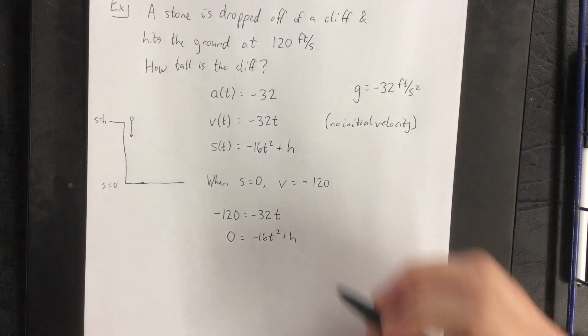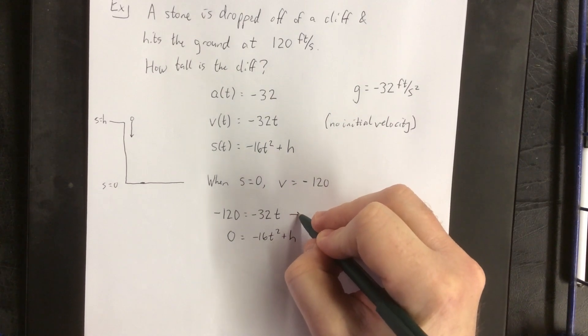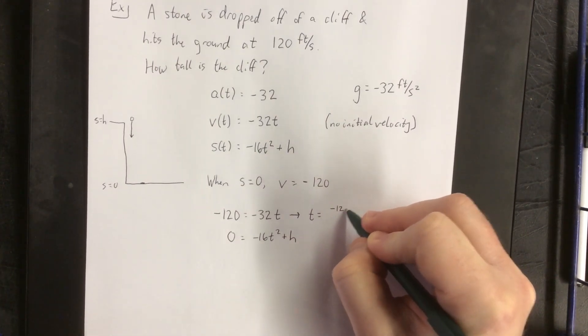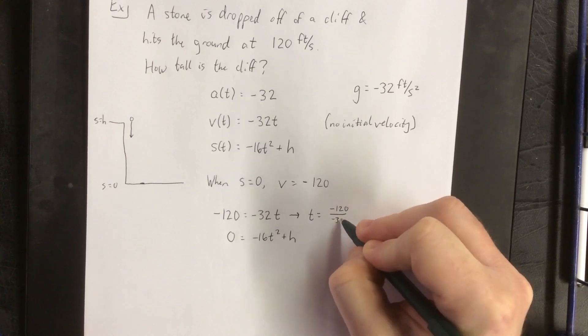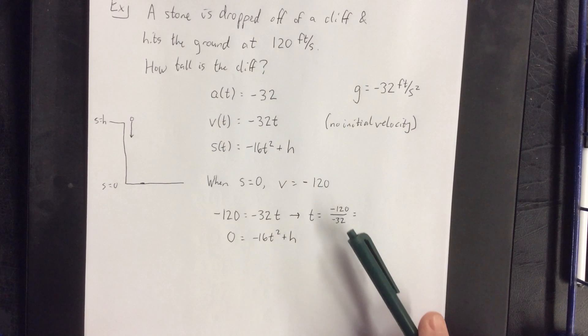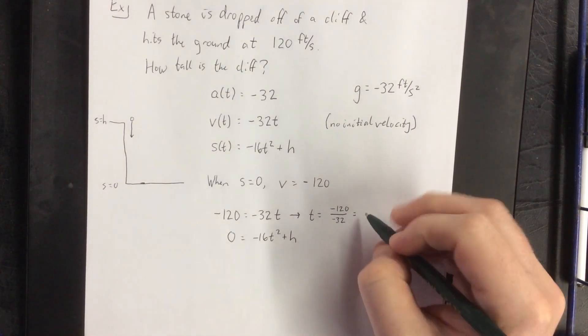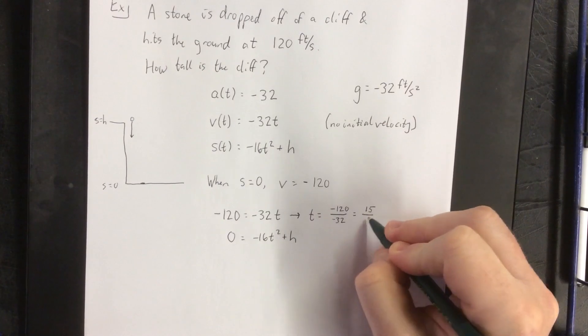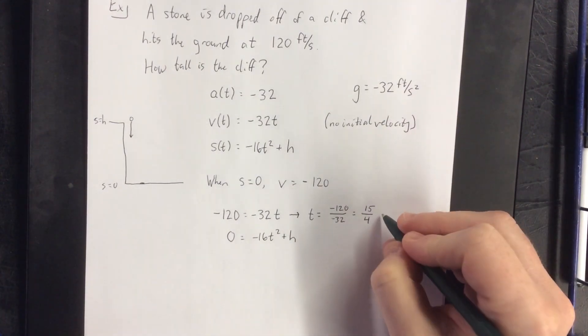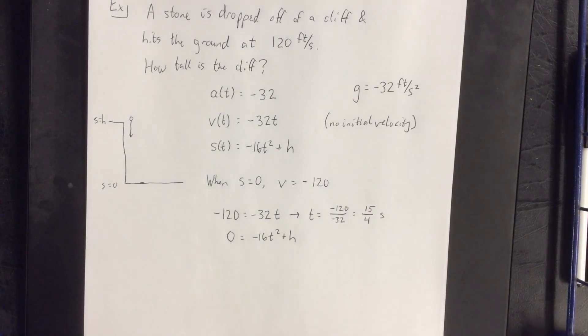I think what I'd like to do is first solve this equation for t. We can do so by dividing both sides by negative 32. I know that 8 will go into both of these, and we can cancel the negatives as well. We'll wind up with 15 over 4. Now, that's a time, and time was given in seconds, so that'll be 15 quarters seconds, not 15.4.